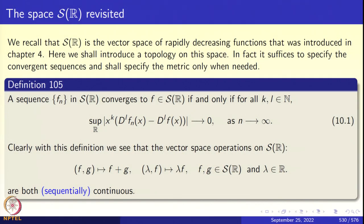With this introduction, let us proceed to the definitions. Recall that in Chapter 4, we introduced the space S(R), the space of rapidly decreasing functions introduced by Laurent Schwarz. This space is very convenient for discussing the Fourier transform. It consists of C-infinity functions, so I can differentiate elements of S(R) as many times as I want, and all the derivatives decay very rapidly — even after multiplying by a polynomial of whatever degree you want. For example, e to the power minus x squared is an element in this Schwarz class.